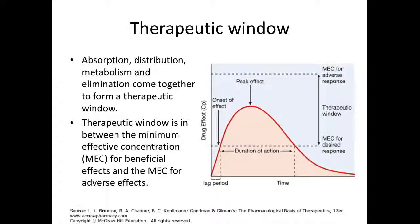An important concept in pharmacokinetics is the therapeutic window. This is defined as the minimum drug dose that produces a desired effect up to the maximal dose that does not produce adverse effects. Within this therapeutic window, there is often a sweet spot where the drug dose produces the peak desired therapeutic effect. All factors of pharmacokinetics, such as absorption, distribution, metabolism, and elimination, feed into the characteristics of each drug's therapeutic window.